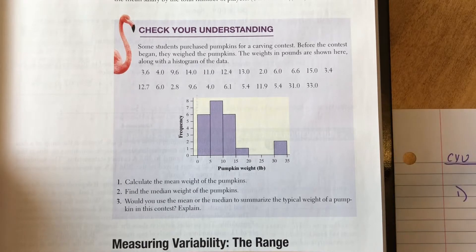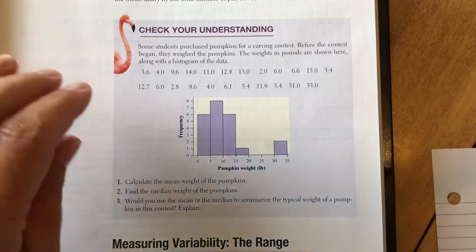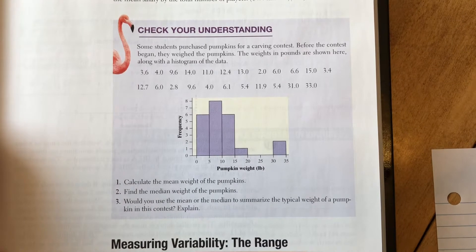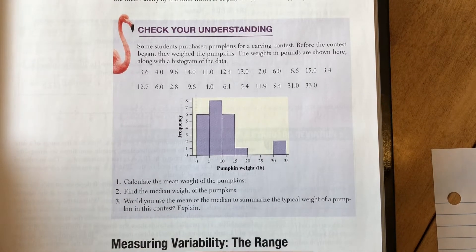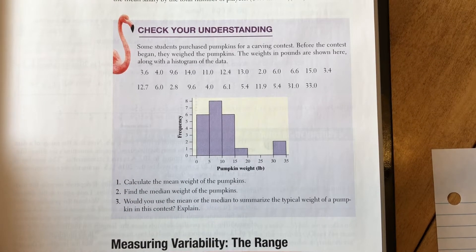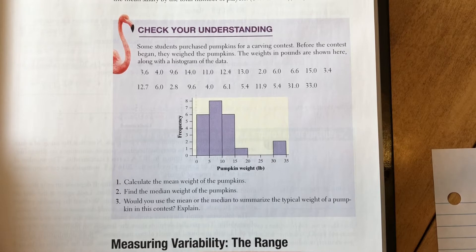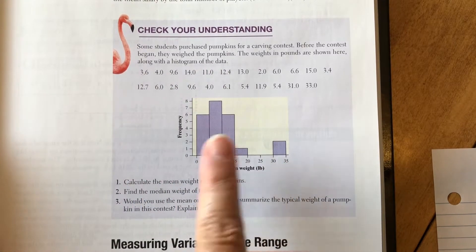Okay, I'm going to start quantifying things here. Alright, some students purchased pumpkins for a carving contest. That sounds like fun. Before the contest began, they weighed the pumpkins. The weights in pounds are shown here, along with the histogram of the data.